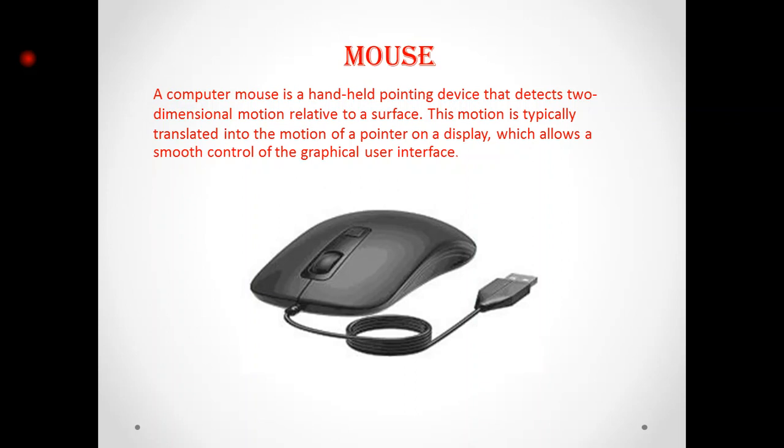In early days there were mechanical type mice which had a ball on their surface that moved in the X and Y directions. But now in present days, optical mice are mainly used, which send light and detect movement in the X and Y axis directions.